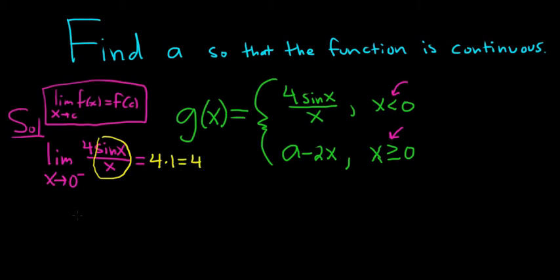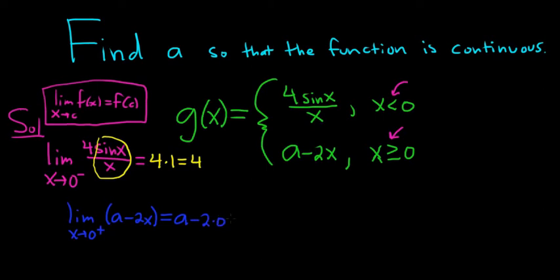For the limit from the right — as x approaches 0 from the right — x is bigger than 0, so we use the bottom piece: a minus 2x. We can just evaluate this at 0 by plugging in: a minus 2 times 0, which is a minus 0, which is just a.